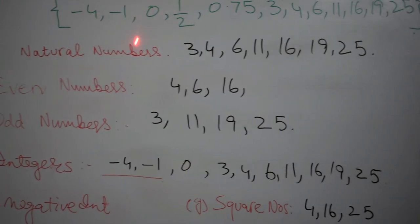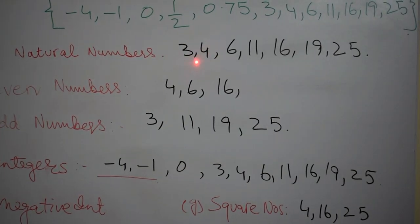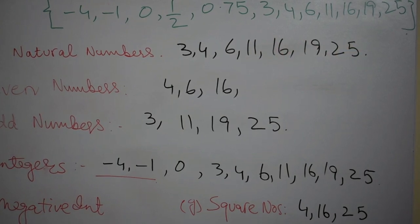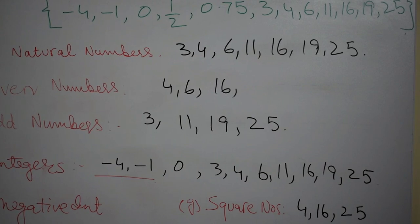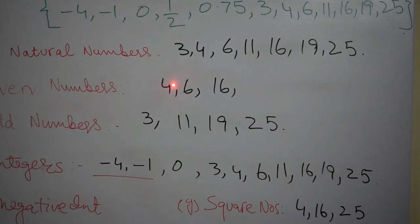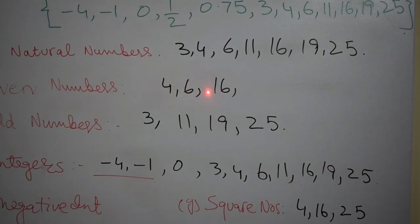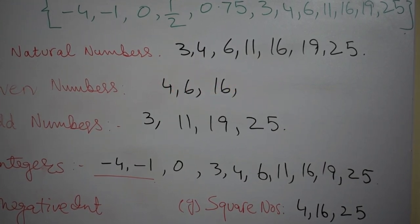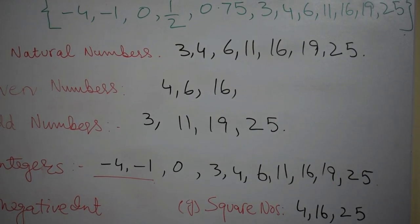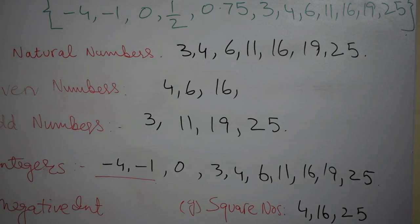So the natural numbers are 3, 4, 6, 11, 16, 19 and 25 from this given example. Then comes even numbers. Even numbers are only 4, 6 and 16. Here you can see 4, 6 and 16 are the even numbers.